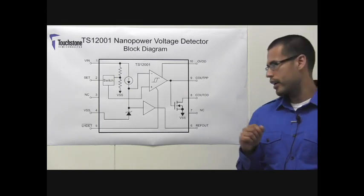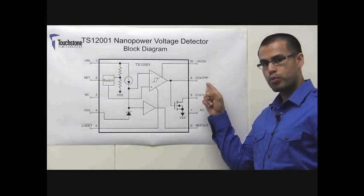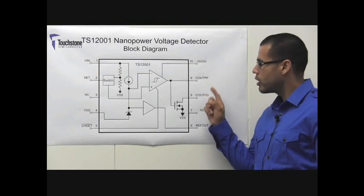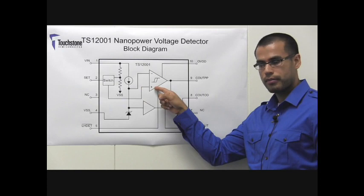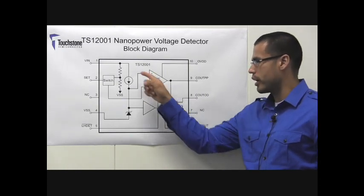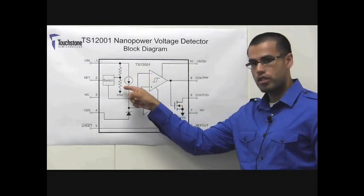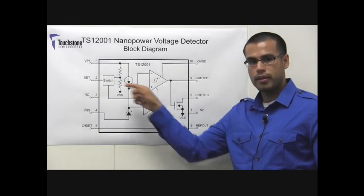In this block diagram, the TS-12001 has a push-pull and an open drain output. The outputs will respond based on the non-inverting inputs of the comparator. The input is either a voltage generated by an internal voltage divider circuit or the voltage from the set pin.